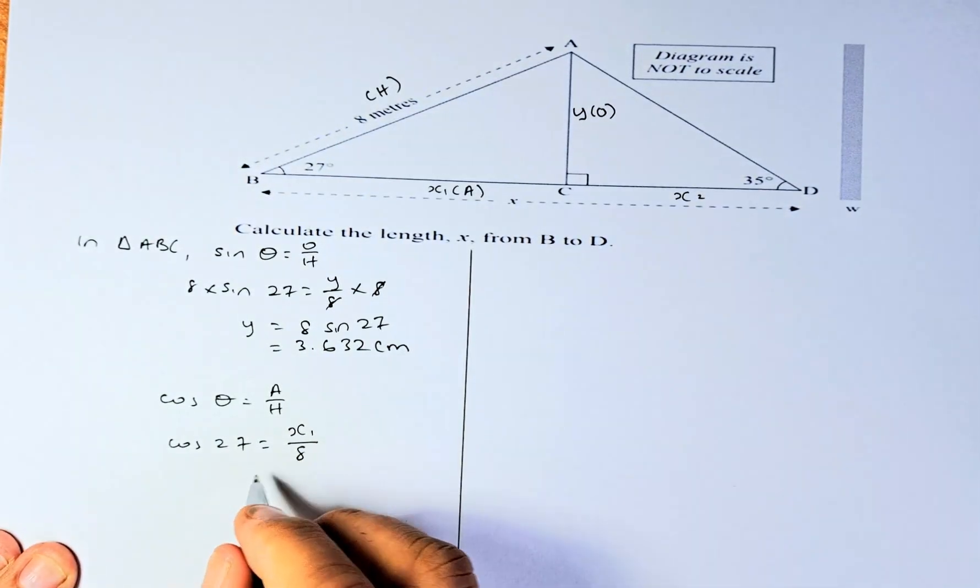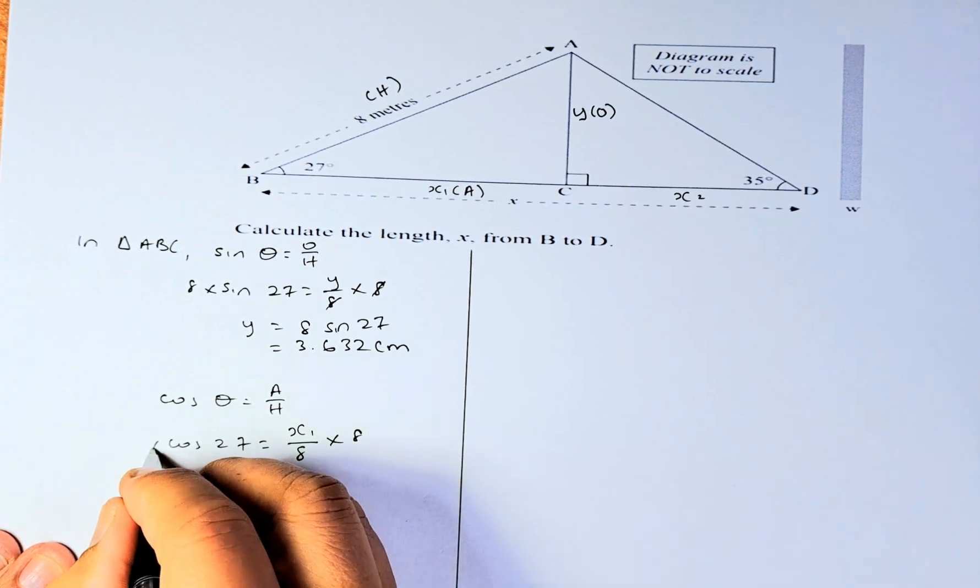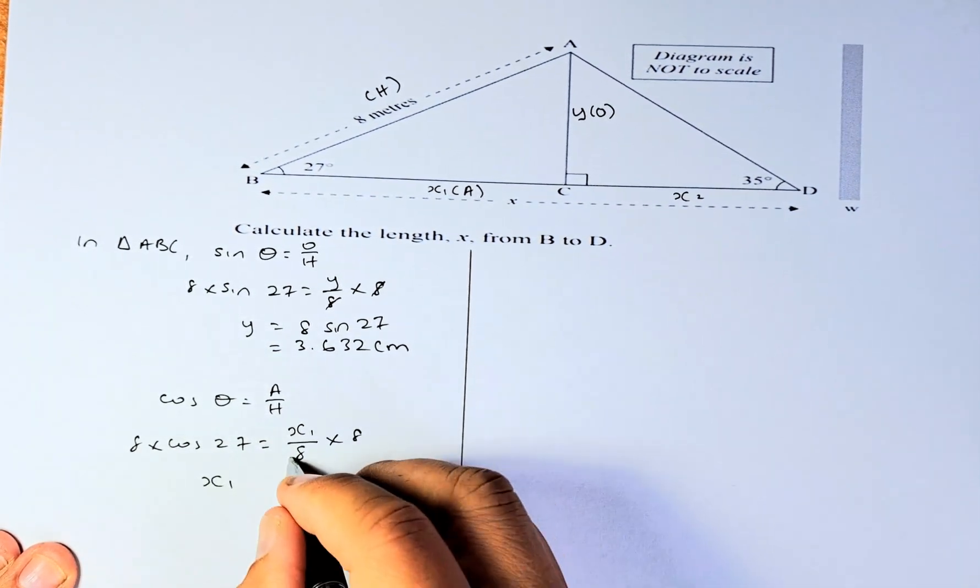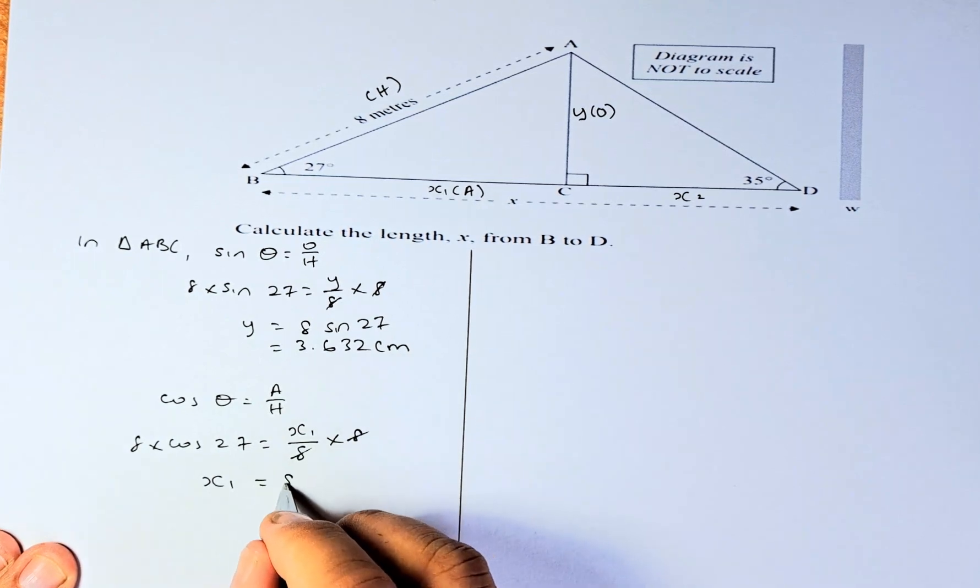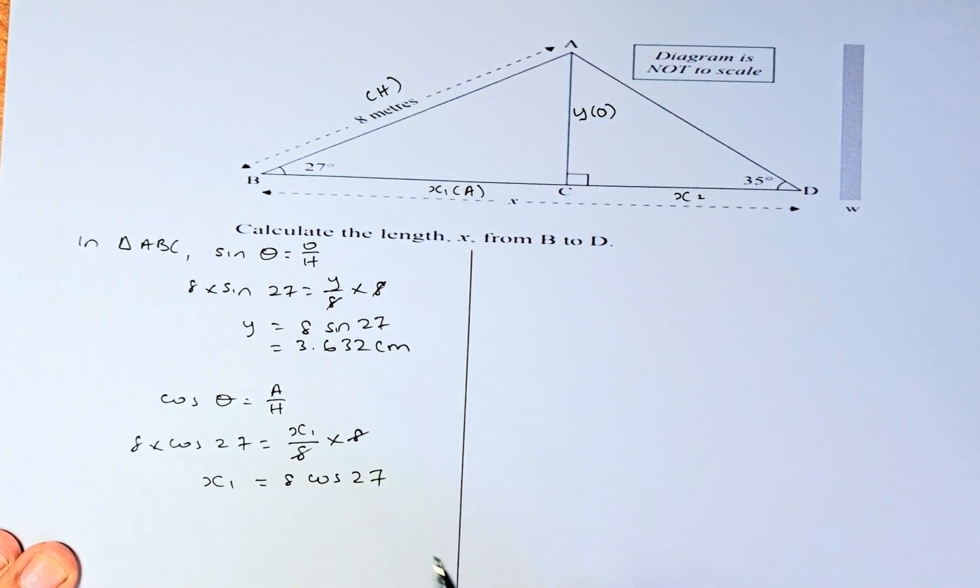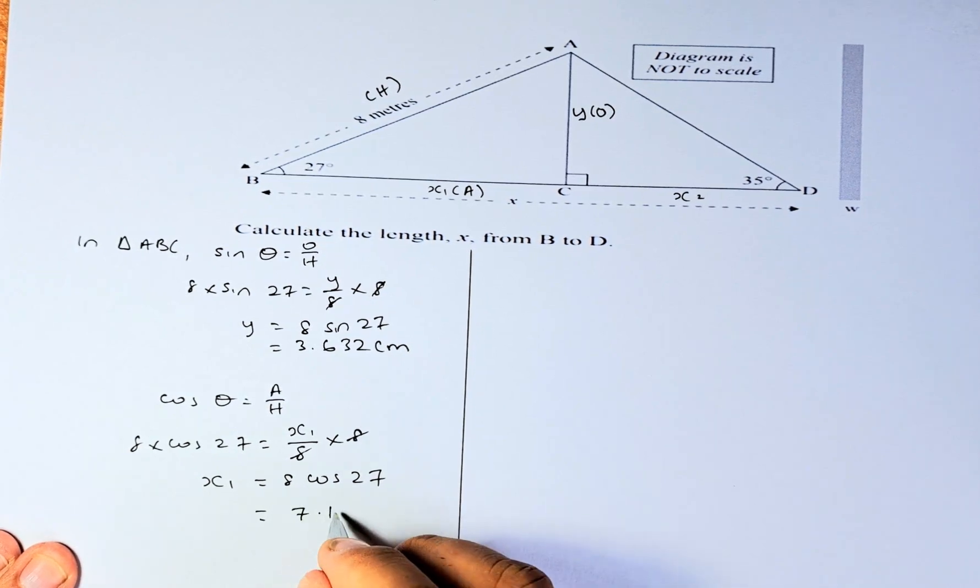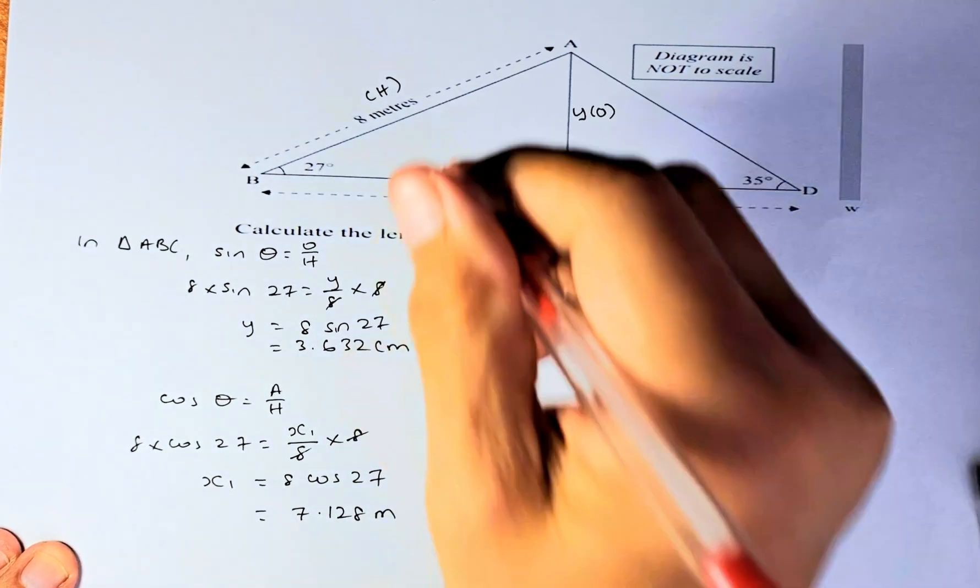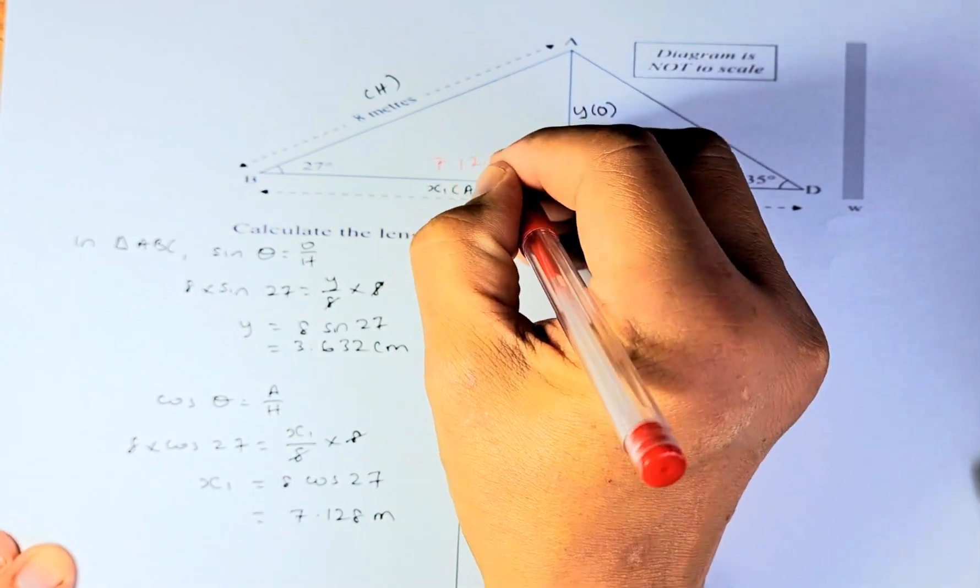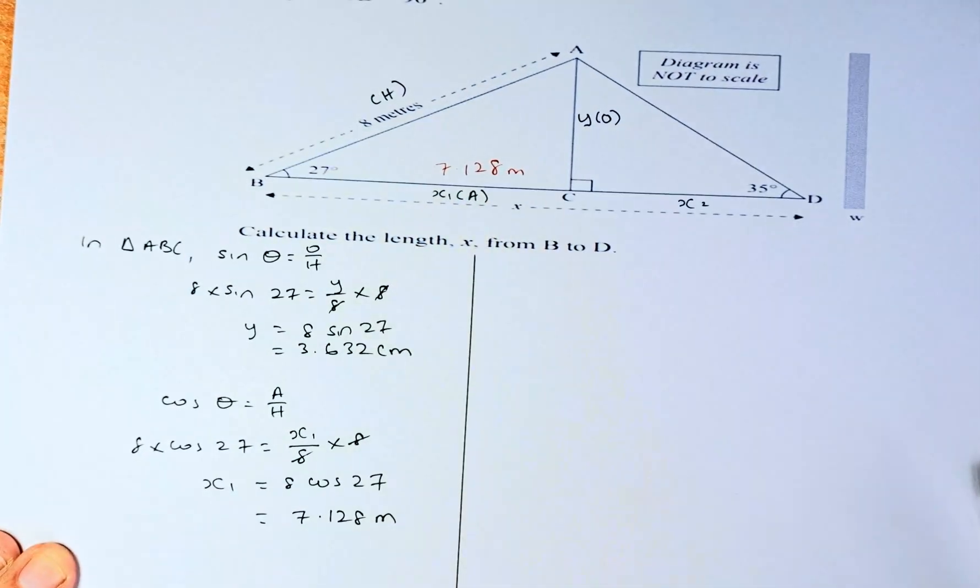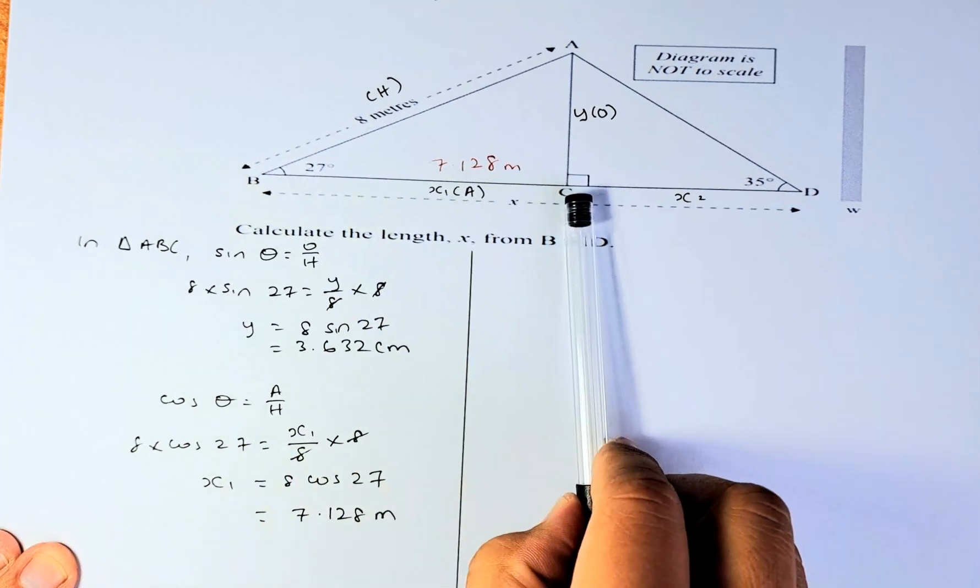To calculate X1, you multiply by 8 on both sides. X1 is going to be 8 cosine 27. Put it in your calculator, and the answer is going to be 7.128 meters. We have calculated BC.